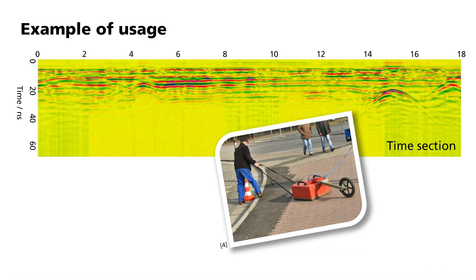Initially, you can see the time section of a measurement recorded on a paved road. You can see the positive and negative amplitudes of the waveforms in red and blue. One can clearly see horizontal reflectors that sometimes appear to be stronger and sometimes appear to be weaker. In addition, so-called diffraction hyperbole form, which, as in seismics, indicate point-shaped reflectors in the subsurface.